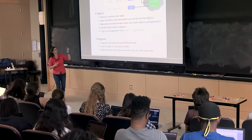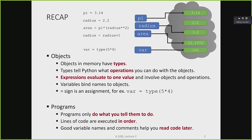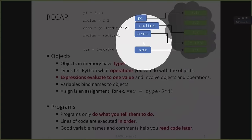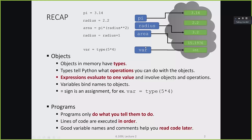For a line like var equals type(5 times 4), Python evaluates the right-hand side: 5 times 4 is 20, type of 20 is int, so var is bound to the value int. This is a little strange — so far we've mostly put numbers in memory, but we can put any object type.